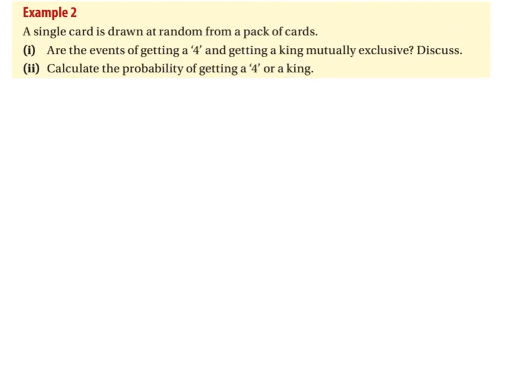In this example, a single card is drawn at random from a pack of cards. The first thing we're asked is: are the events of getting a four and getting a king mutually exclusive? Yes, they are — because we cannot get a card that is simultaneously a king and a four. It's either a four or a king. So these events are mutually exclusive.